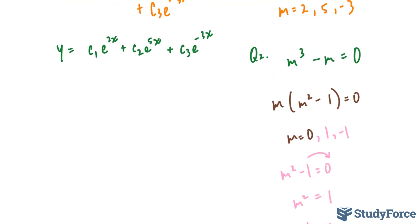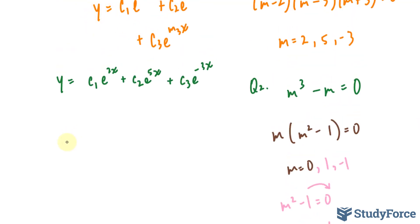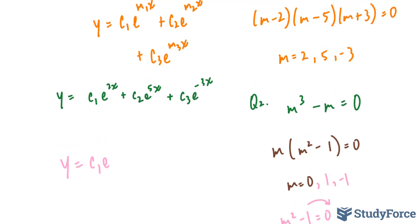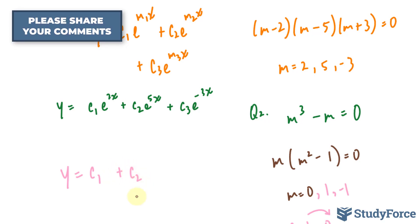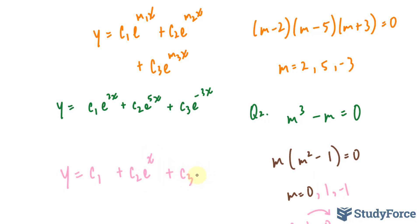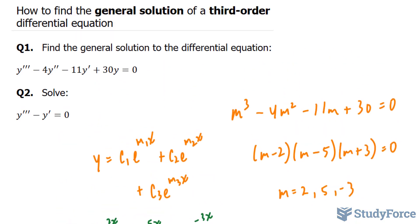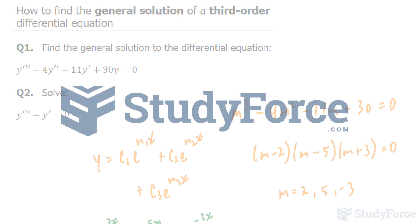Using the exact same template written in orange, our final answer is y is equal to c1 e to the power of our first m, which is 0. e to the power of 0 is equal to 1. I've erased the e for convenience. Plus c subscript 2 times e to the power of our second m, which is 1, times x. Plus c subscript 3 times e to the power of our third m, which is negative 1, times x. This represents the solution to question number 2. And that is how to find the general solution of third order differential equations.